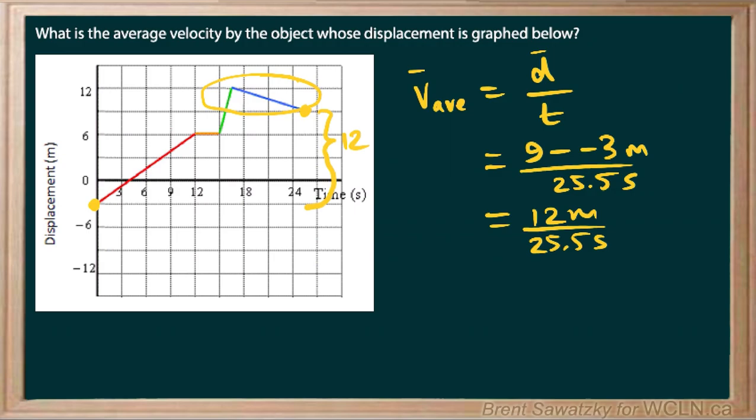But when we're talking about displacement and average velocity and therefore displacement, we wouldn't include that. We're just interested where we ended up versus where we started. So we can throw this into our calculator and we end up with 0.47 meters per second.